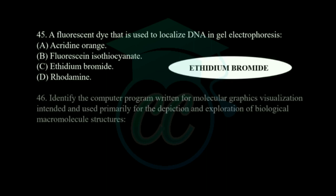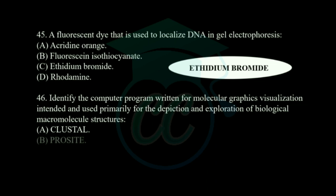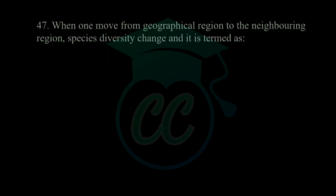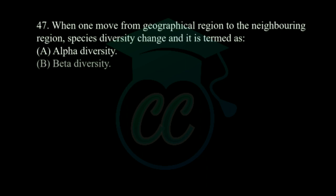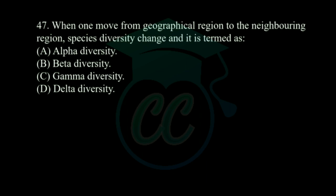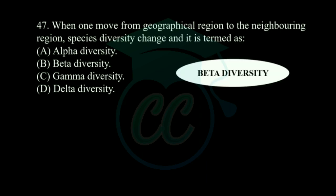Next question: a fluorescent dye used to localize DNA in gel electrophoresis is — options: acridine orange, fluorescein isothiocyanate, ethidium bromide, and rhodamine. The correct answer is ethidium bromide. Next question: identify the computer program used for molecular graphic visualization, primarily for deposition and exploration of biological macromolecular structures — options: Cluster, ProCite, RasMol, and Sweet Spot. The correct answer is RasMol.